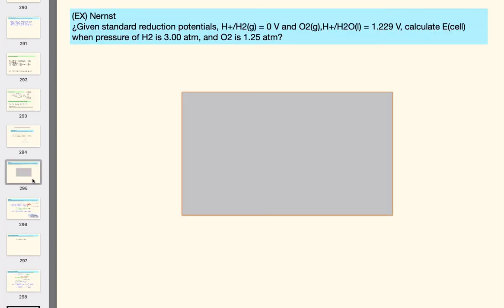Let's work another one. Calculate the standard reduction potentials of H+ going to H2, the sheet electrode, and oxygen and hydrogen going to water. We know the voltage for that standard cell is 1.229 volts. What is E cell when the pressure of H2 is three atmospheres and O2 is 1.25? Well, what do we have here?